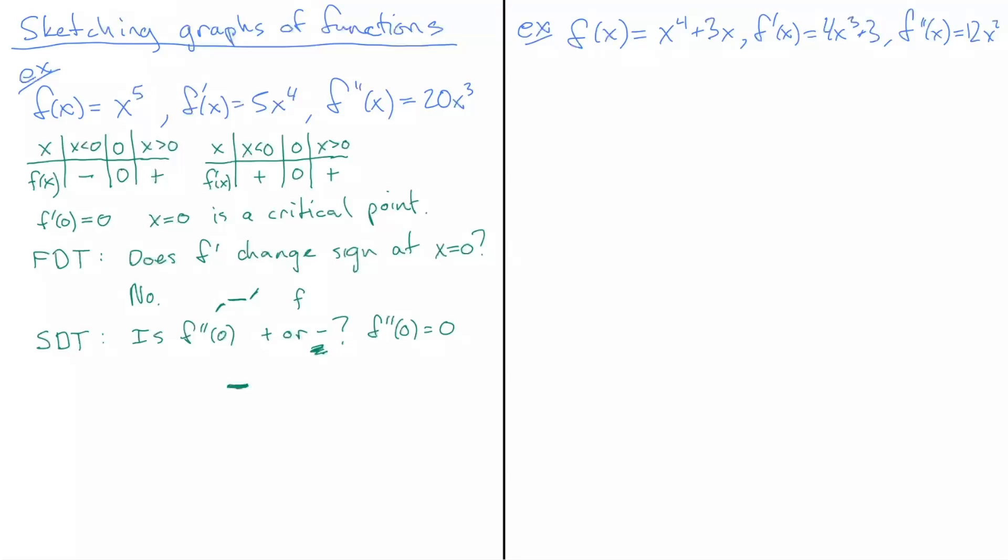The second derivative test was not useful. Because f''(0) = 0, the second derivative test fails to give information. However, the first derivative gave us information—it told us not only that we didn't have a min or a max, but that we had no change in slope through zero. What we can do now is analyze f'' further.